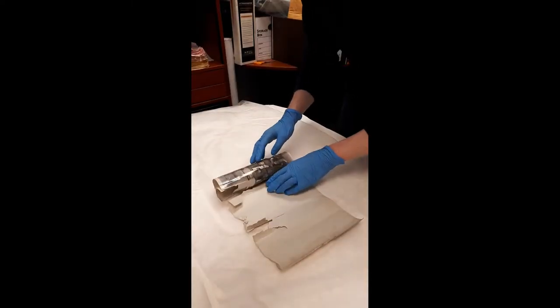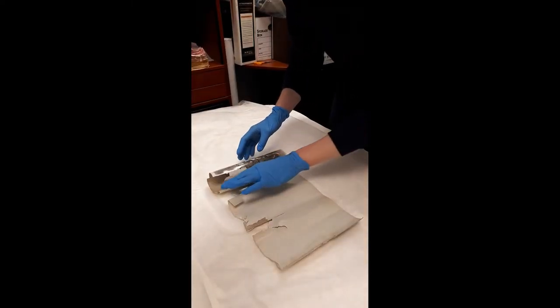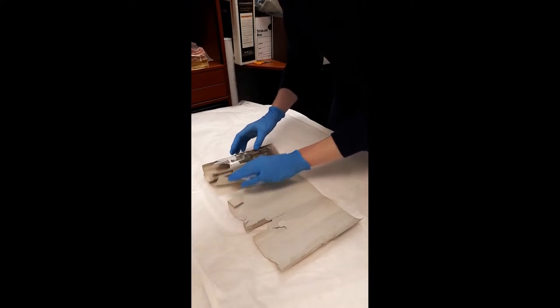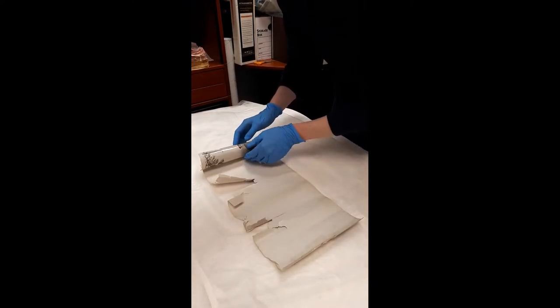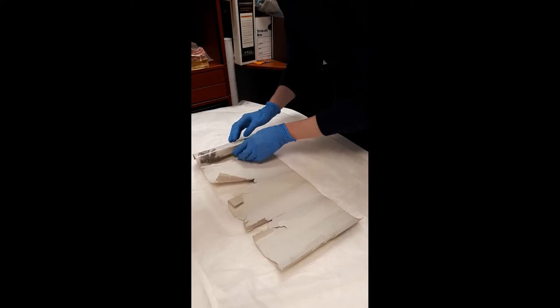Now that the paper is just ever so slightly floppy, but definitely not actually wet, we can unroll it without damaging the image, weigh it down, and see what's inside.